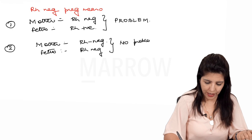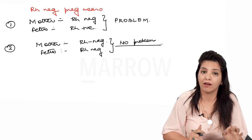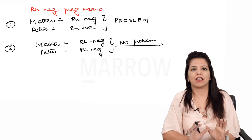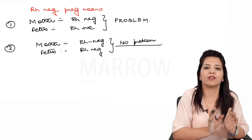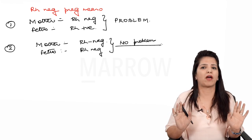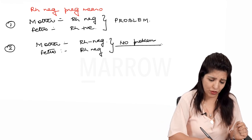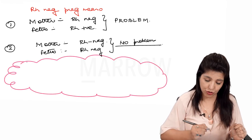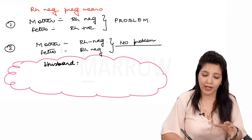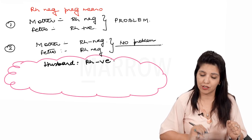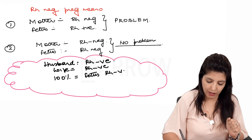The problem in RH negative pregnancy arises only if the mother is RH negative but the fetus is RH positive. If we can determine whether the fetus is RH positive or negative, we can assess risk. One easy way to know that is through the husband's blood group. If the husband is also RH negative, there are 100% chances the fetus will be RH negative.